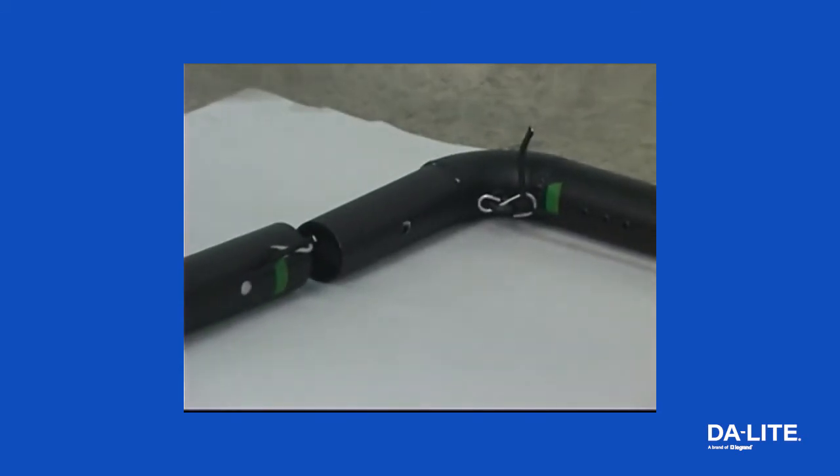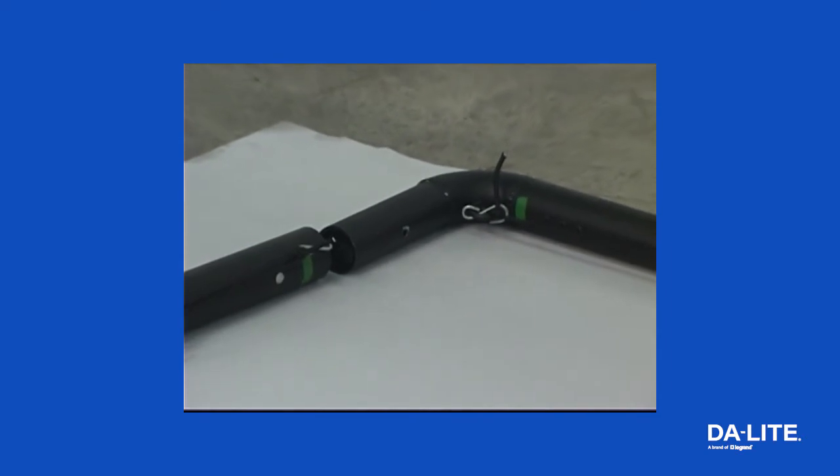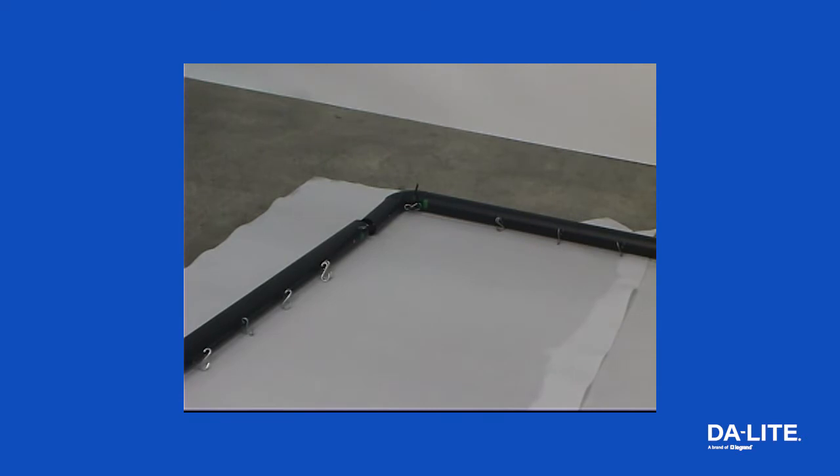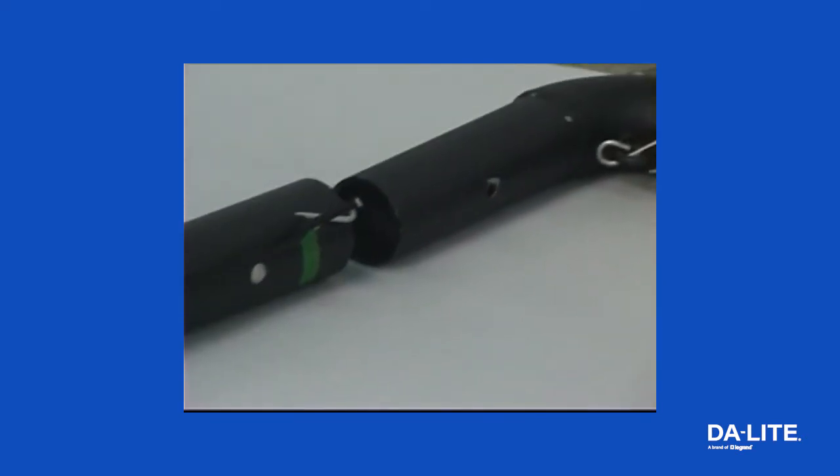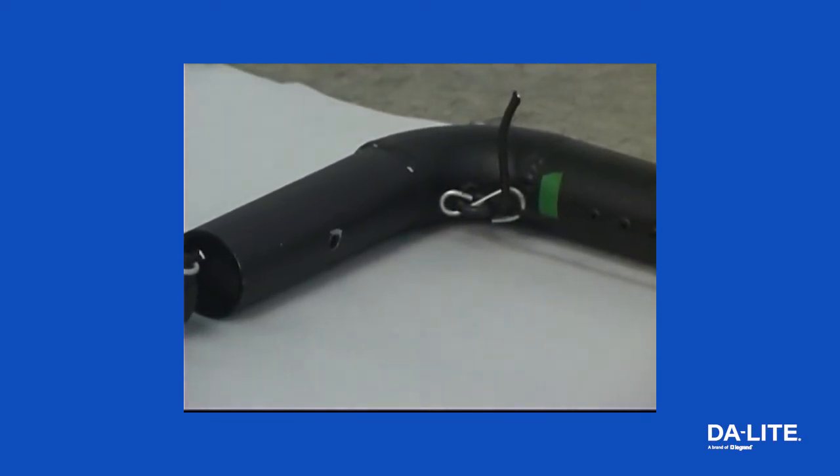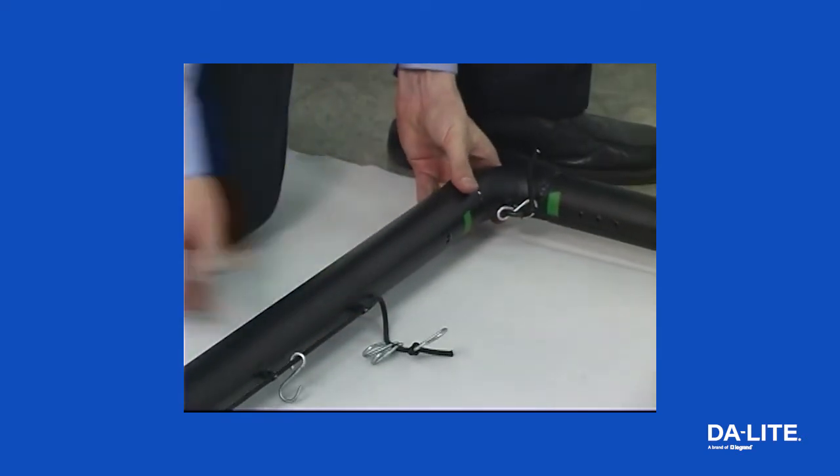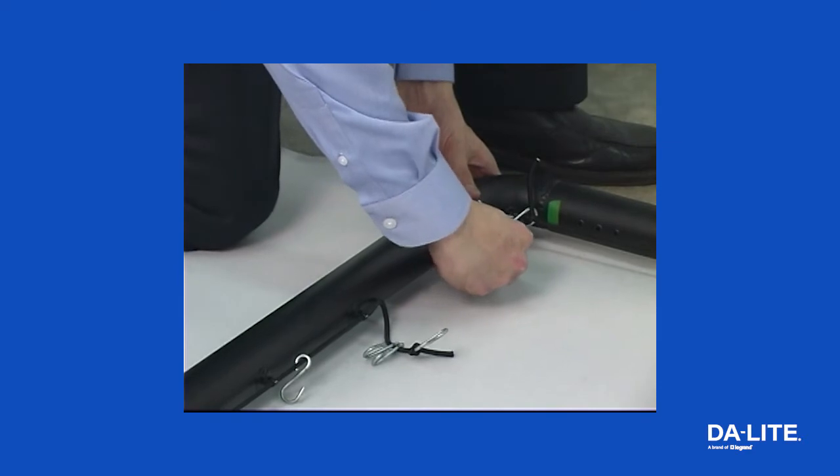To assemble and install your Series 200 or Series 300 frame, start by unwrapping the frame sections and position the sections on a clean surface. The ends of each section are color-coded and the colors will match at each corner. Slide the side frame sections into the top frame sections and insert one bolt at each corner.